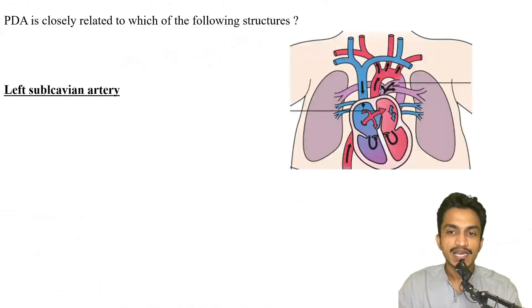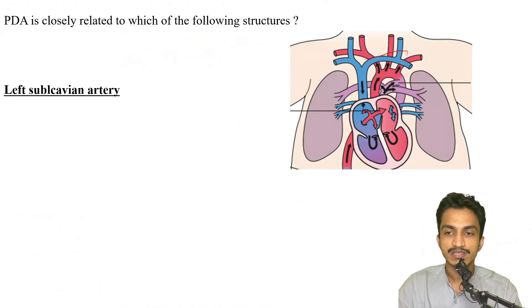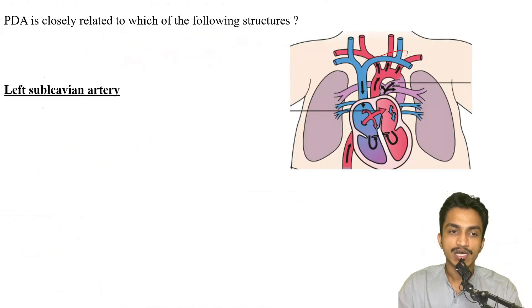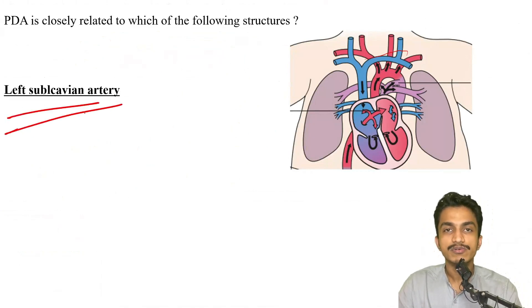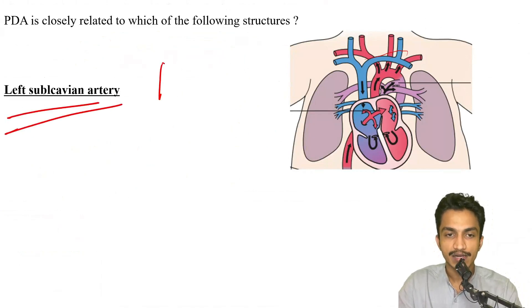PDA is related to the left subclavian artery because it is the connection between the pulmonary artery and the aorta, and it is distal to the left subclavian artery.